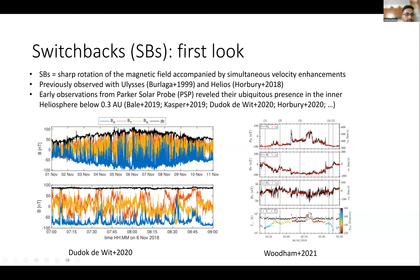These structures appear at different scales if you zoom in, and they were observed before by other missions such as Ulysses or Helios. The surprising part with PSP is that they seem to be ubiquitous in the inner heliosphere. Another defining property of switchbacks is that they are highly Alfvénic — the velocity field overlaps with the magnetic field component by component, showing a perfect agreement.